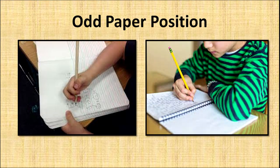The next indicator is odd paper position. We know that for a right-handed child the paper is kept in one position, and for a left-handed child it is held differently. But a child with writing difficulty may position the paper in a strained way — tilted too far in one direction — causing strain on the shoulder. This makes the child feel pain and tire quickly, leading to incomplete tasks. The child will say 'I am tired' and leave the task unfinished.